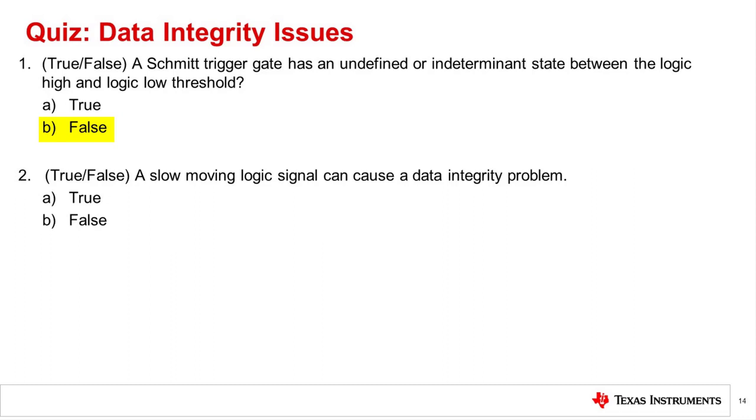Question 2. True or false? A slow moving logic signal can cause a data integrity problem. The correct answer is A, true. A slow moving signal will transition slowly through the indeterminate zone. This can cause chatter in the detected output.